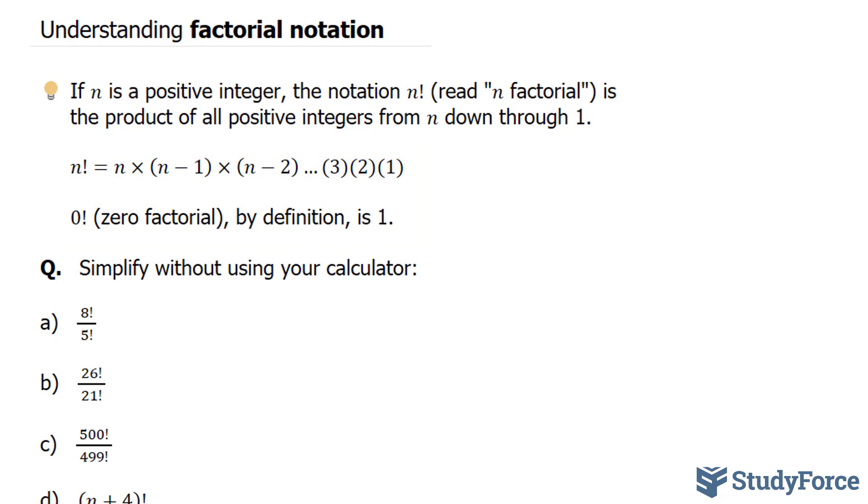0 factorial by definition is equal to 1, so if you ever see 0 factorial, that's like saying 1. Just to give you a clearer understanding before we start, let's say you have 5 factorial, that's the same thing as saying 5 times 4 times 3 times 2 times 1.